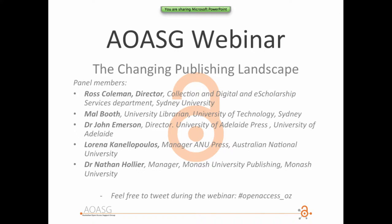There's a whole range of things around what's called scholarly communication. A university press or e-press of some sort that publishes material with peer review quality is a critical part of that. Certainly at Sydney, there's a commitment to that process. We've just gone through a restructure which in fact strengthens the capacity around scholarly publishing.